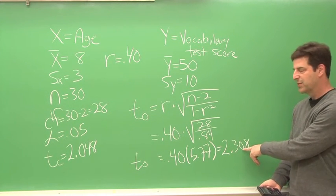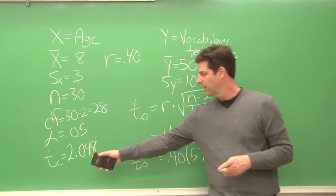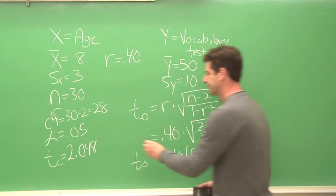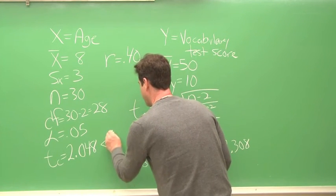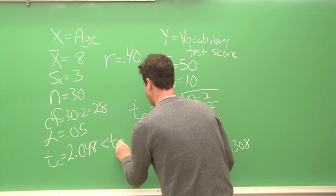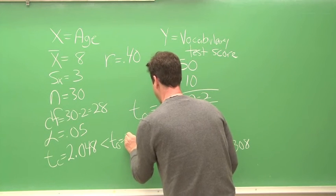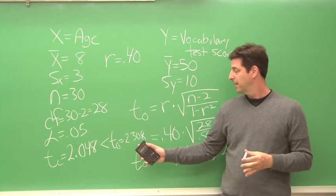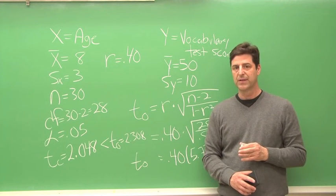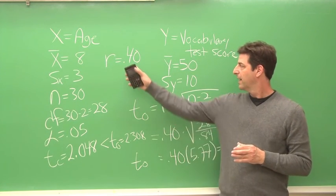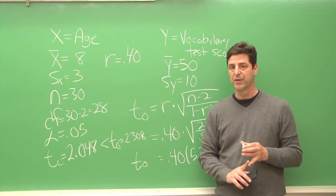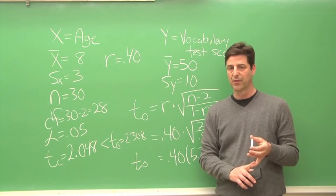And when we compare our observed value to our critical t-value, we see that our observed t-value is larger. And that means that our observed t-value is statistically significant. That tells us that the correlation coefficient that we found in the sample of .40 is a statistically significant correlation coefficient.